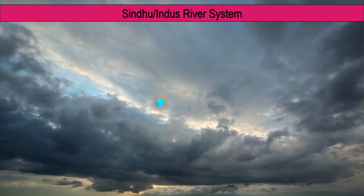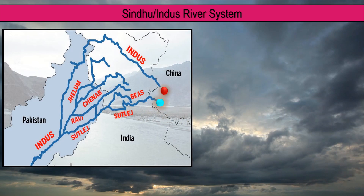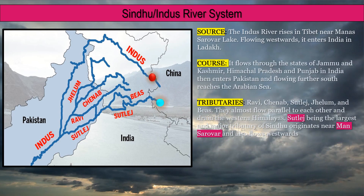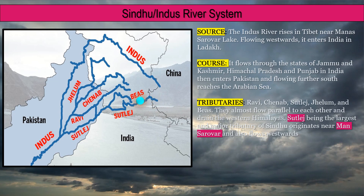We will now study the Sindhu or Indus river system. The Indus river rises in Tibet near Manasarovar Lake. Flowing westward, it enters India in Ladakh and flows through the states of Jammu and Kashmir, Himachal Pradesh and Punjab. Then it enters Pakistan and flowing further south, reaches the Arabian Sea.